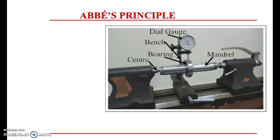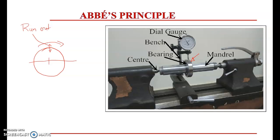The figure shows a setup for measuring the run-out of a bearing. Run-out refers to the slight deflection caused by eccentricity in the bearing while rotating. Even if we assume the bearing is concentric, in actual practice it has a certain amount of eccentricity, and while rotating there will be a slight deflection. This deflection — a slight variation in circularity during rotation — is referred to as run-out, and it needs to be measured.